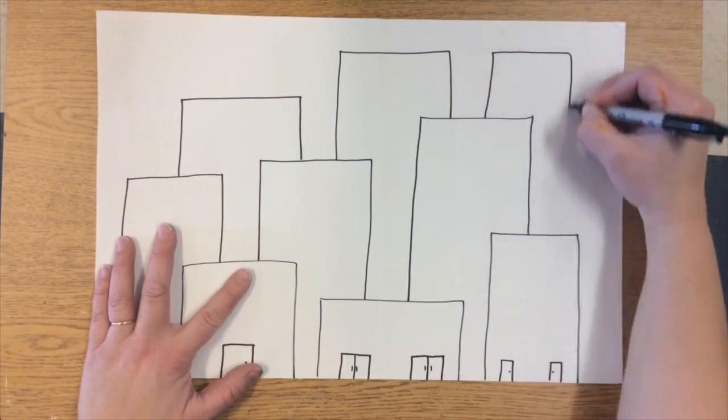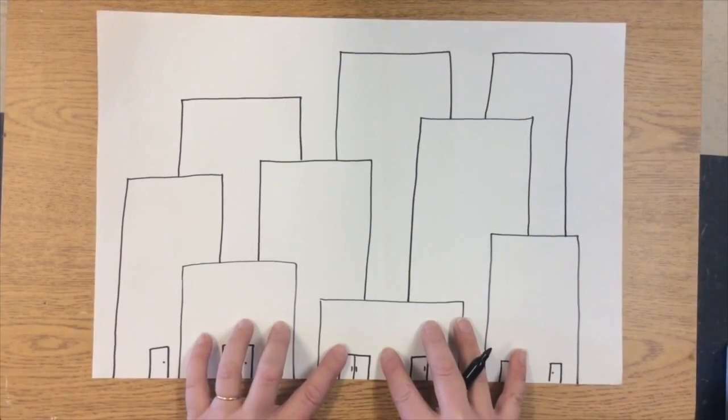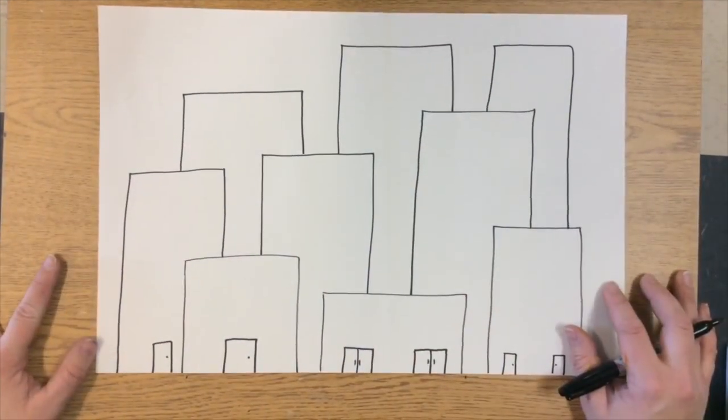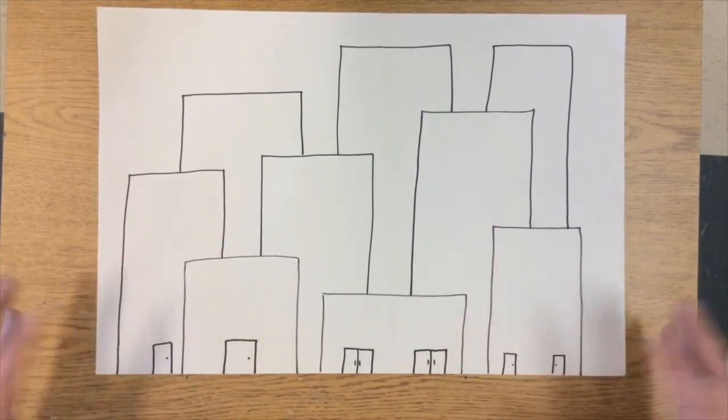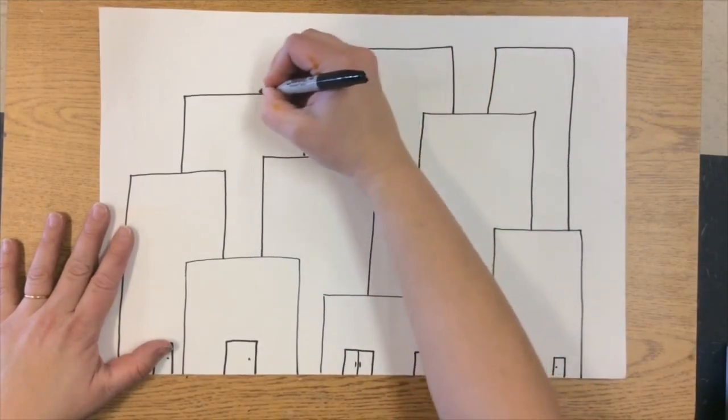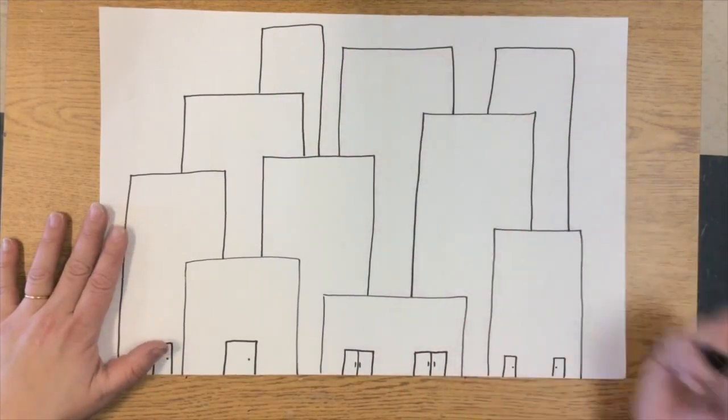I'm going to go ahead and make it a nice even nine buildings showing so I have three in the foreground, three in the middle ground, and three in the background. And when you think of it that way it doesn't seem like much, but when you look at this you're like, oh my gosh, it's a whole city. I'm going to put a really skinny building way back in the background. Oh my gosh, it's so far away.